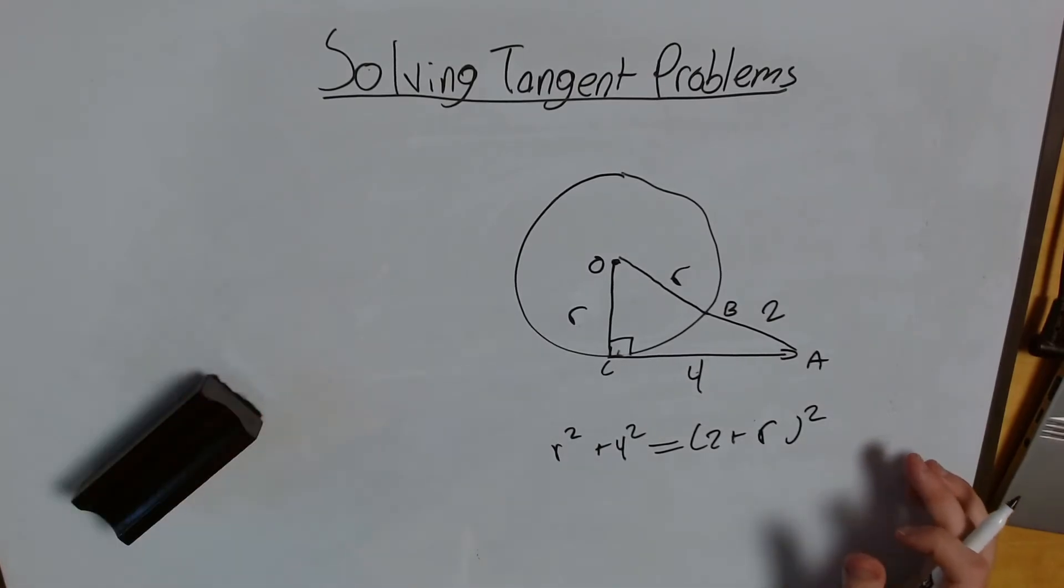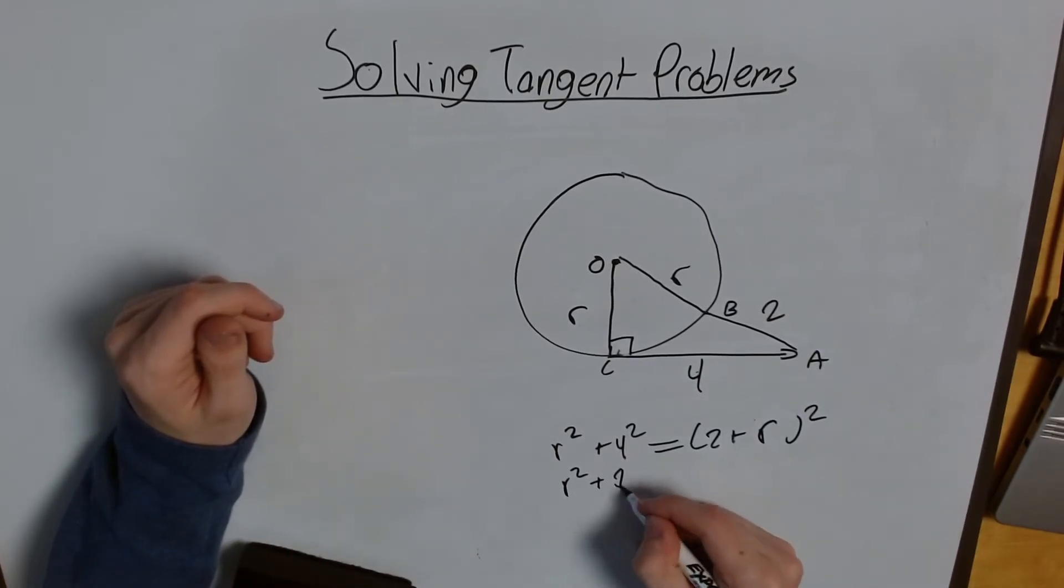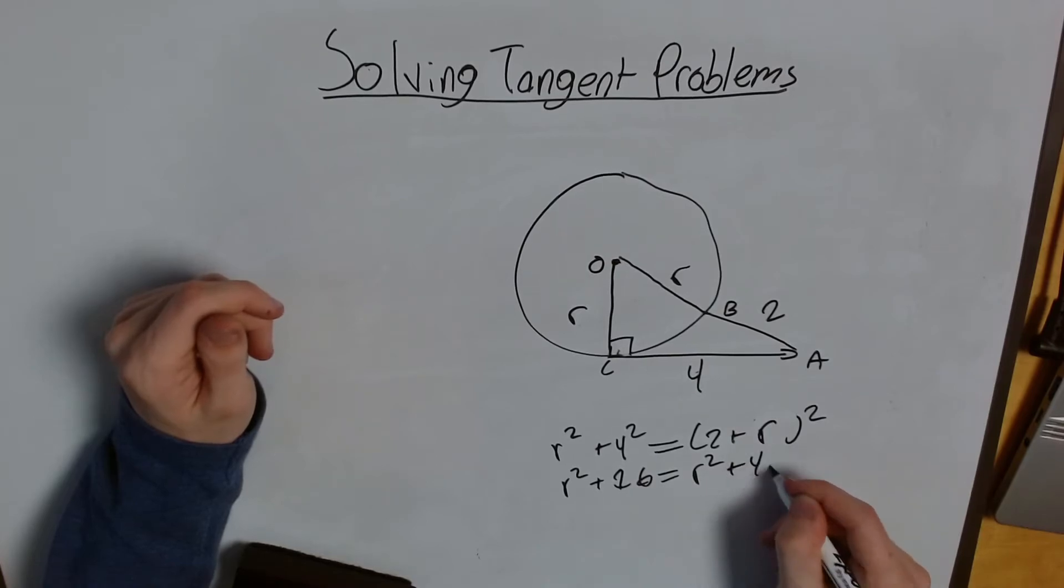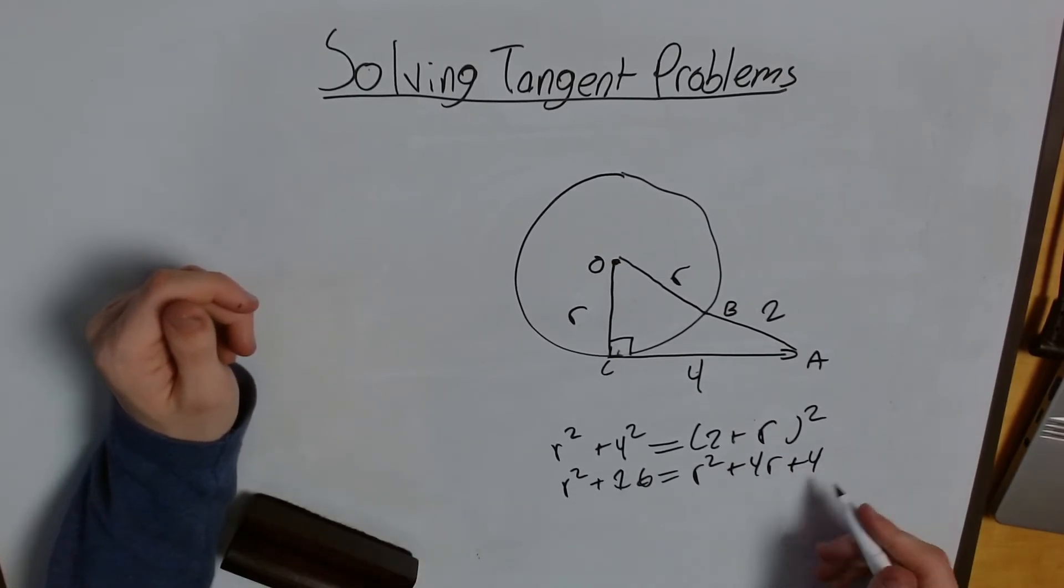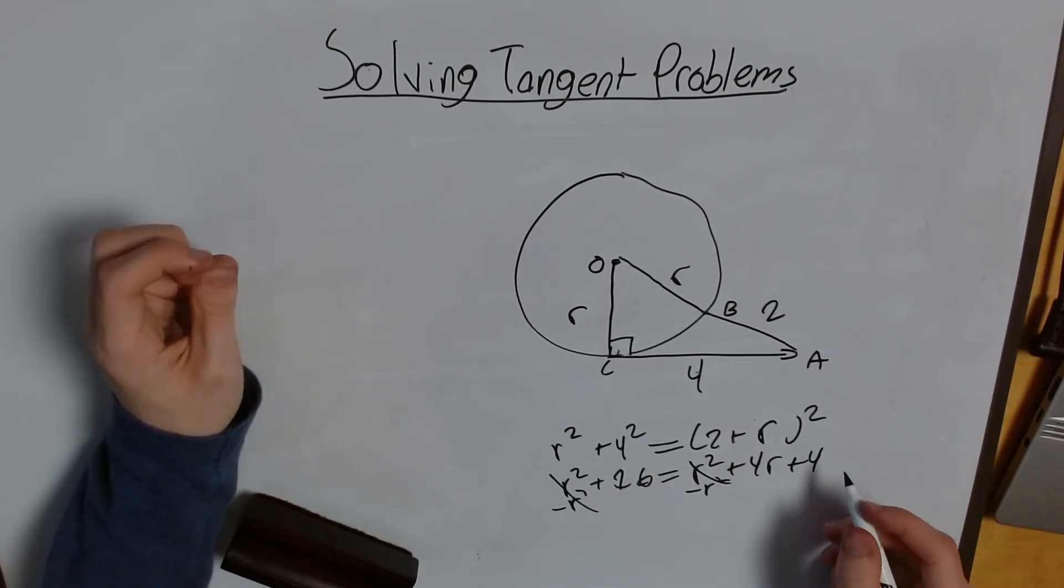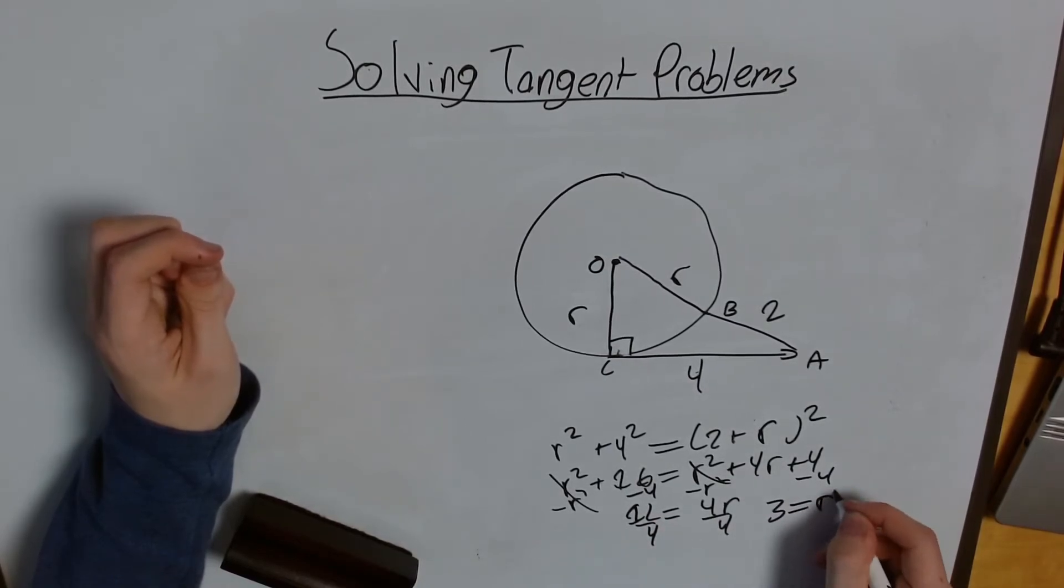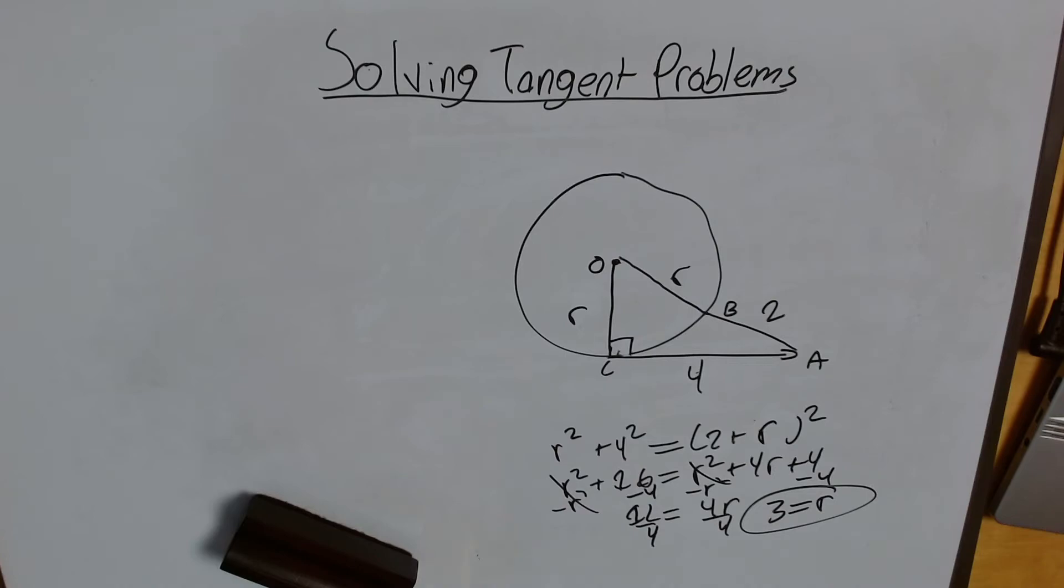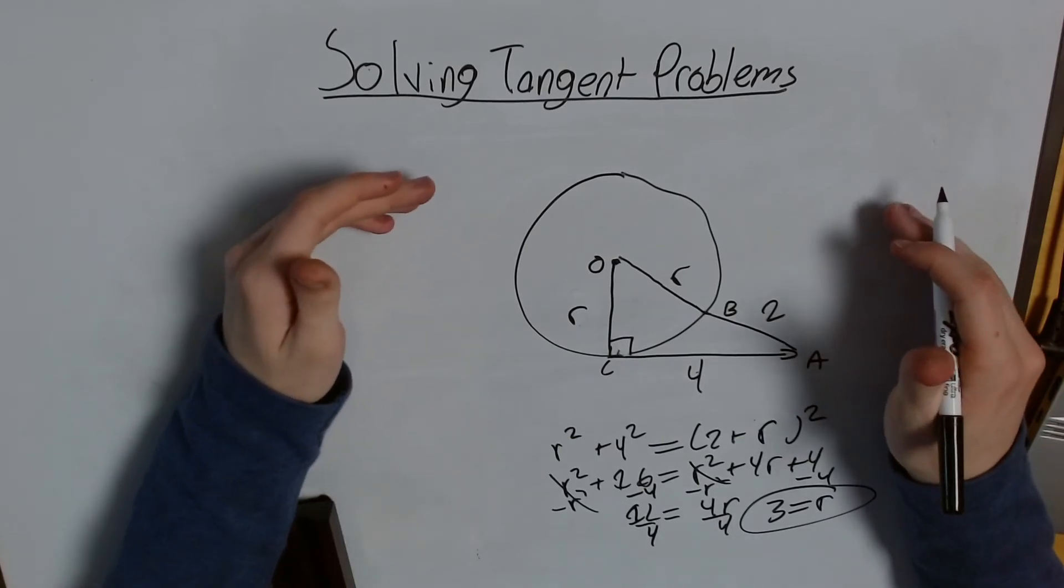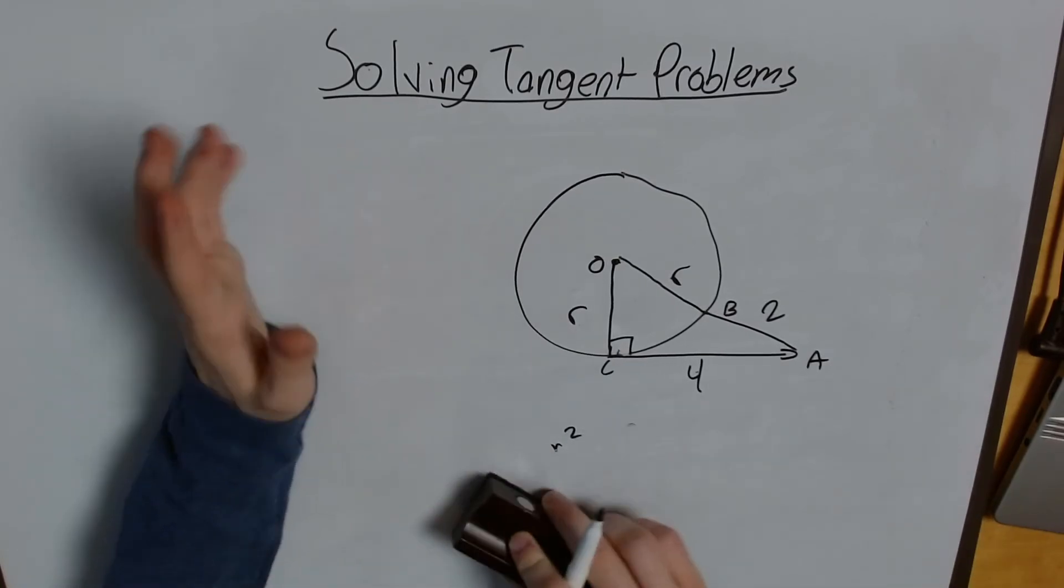Now, all I have to do is simplify. So R squared plus 16 equals R squared plus 4R plus 4. I'm just going to get all my R squareds away. I'm going to subtract 4. I got 12 equals 4R, divided by 4, 3 equals R. And just like that, I've solved my problem by using two pretty basic things, knowing the properties of a tangent and knowing to recognize radii.